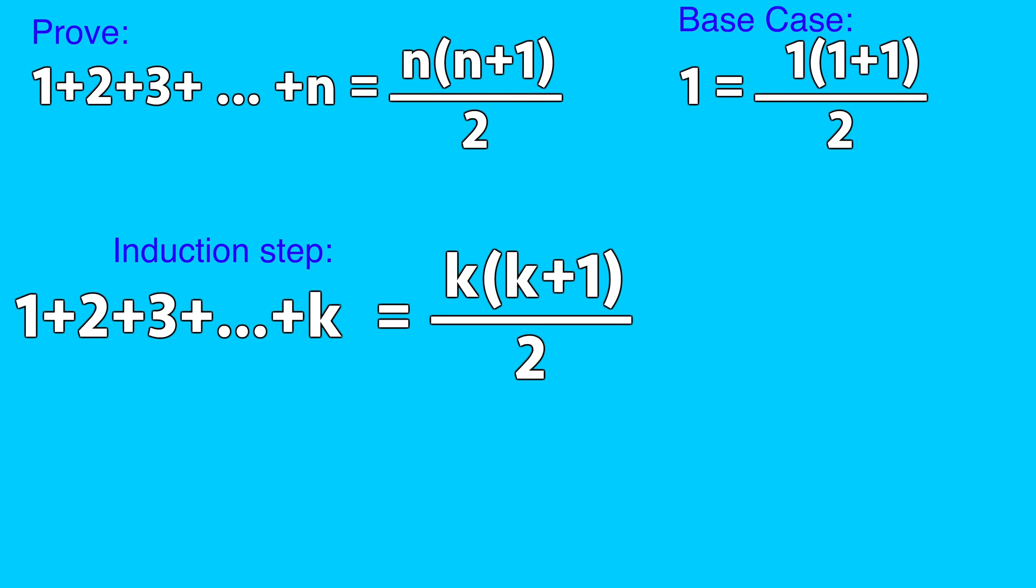Next is the induction step. Assume the formula is true for some integer k. This means we assume that the sum of the first k integers is k times k plus 1 divided by 2.